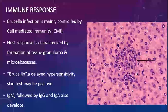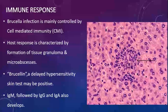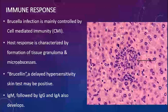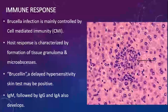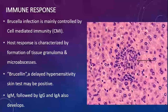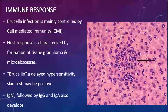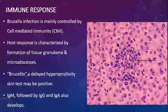The immune response is controlled mainly by cell-mediated immunity (CMI), and the body responds by forming granulomas or micro-abscesses. CMI can also be detected by a dermal hypersensitivity reaction known as the Brucellin test, though this is not commonly done today. The body also produces antibodies — initially IgM, followed by IgG and IgA — which are mainly used for diagnosis, though their role in recovery is limited.